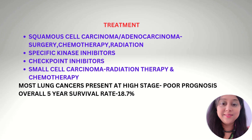Regarding treatment, squamous cell carcinoma and adenocarcinoma are treated by surgery, chemotherapy, or radiation therapy. Specific kinase inhibitors and checkpoint inhibitors are now available. Small cell carcinoma is mainly treated by radiation therapy and chemotherapy. Most lung cancer patients present at an advanced stage, so the prognosis is poor, with an overall five-year survival rate of approximately 18.7%.